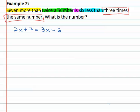We now have an equation to represent seven more than twice a number is six less than three times a number. We can solve this equation like we solved any other equation.